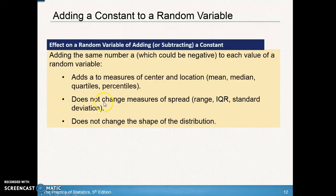However, when we add or subtract a constant, it doesn't change the measure of spread — so it doesn't change the range, the IQR, or the standard deviation. And it does not change the shape, so the shape stays approximately normally distributed, skewed right, or skewed left — that will not be affected.